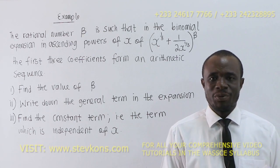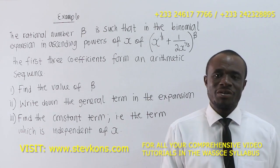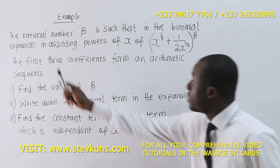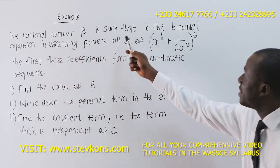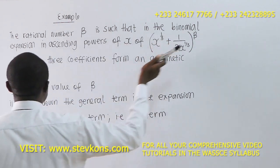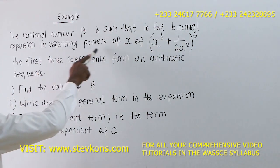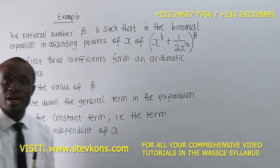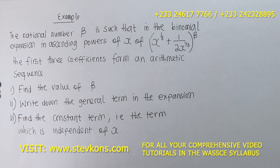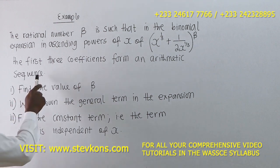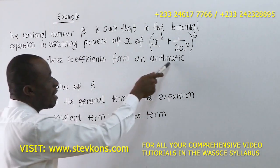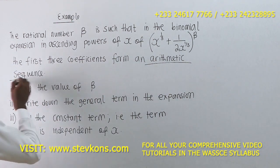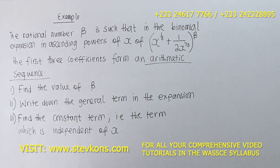Now let's consider this example. You can pause the video and try the question on your own. It's a very nice question. The rational number β is such that in the binomial expansion in ascending powers of x of (x^(1/3) + 2/x^(1/3))^β, the first three coefficients form an arithmetic sequence.